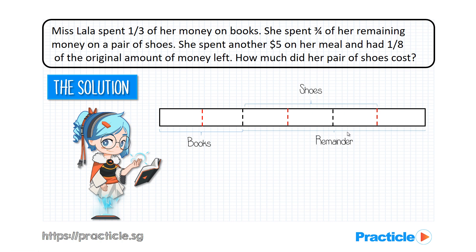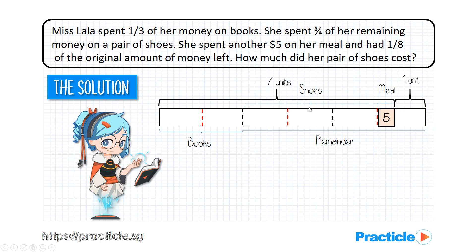Now, what else do we know? We know that she spent another $5 on her meal, so let's label the $5 in the diagram. Frankly speaking, we have no idea how long this $5 should be, so this is just a rough sketch. And in the end, we know that she had one-sixth of the original amount left. This means that this portion over here is one unit out of eight units. Since everything adds up to eight units, this portion over here should represent seven units.